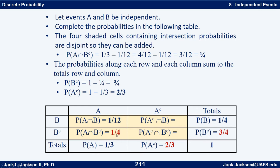And then of course one minus one third is two thirds. We can finish a couple different ways: we can either do three fourths times two thirds — the twos cancel, threes cancel — that gives us one half. Or we could do three fourths minus one fourth to get one half. We get one half and one sixth for those final remaining probabilities, whether you're doing those by subtraction or by multiplying together.